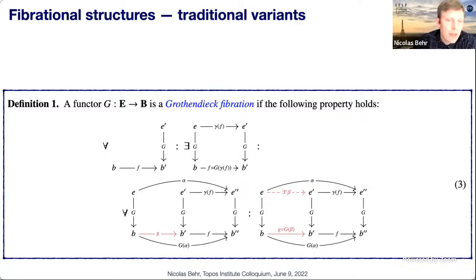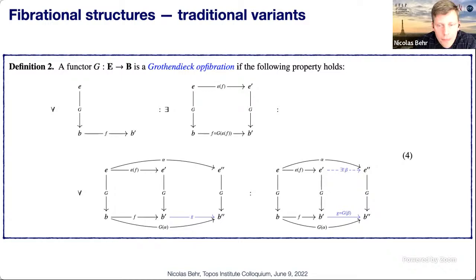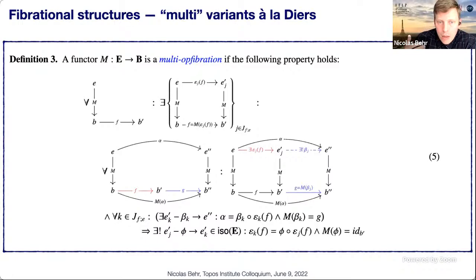Everyone here knows Grothendieck fibrations: a functor is a Grothendieck fibration if for every morphism in the base you can exhibit a Cartesian lift — with a dual op-fibration version having op-Cartesian liftings. For rewriting, however, we need a weakening of this concept: rather than essentially unique Cartesian lifts, we permit a possibly empty family of such liftings, and the second part of the condition differs from the op-Cartesian case.